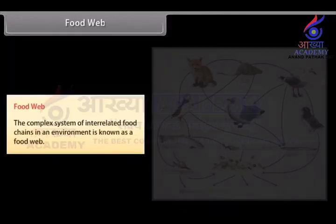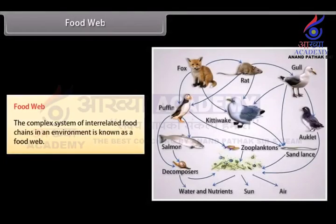Food web: The complex system of interrelated food chains in an environment is known as a food web.